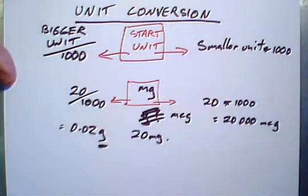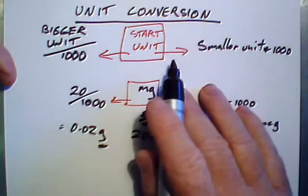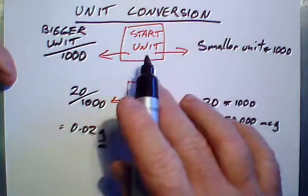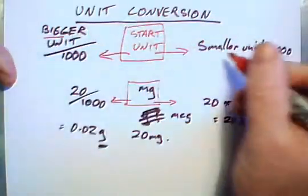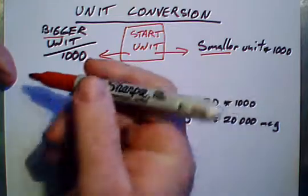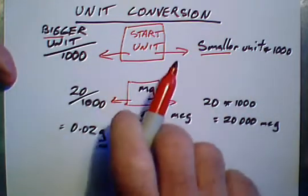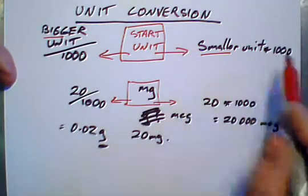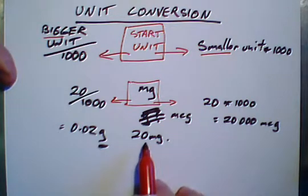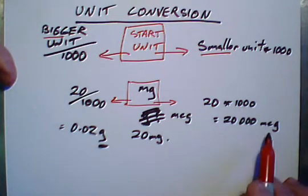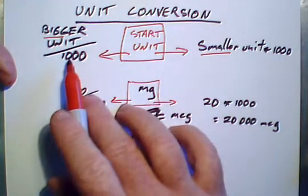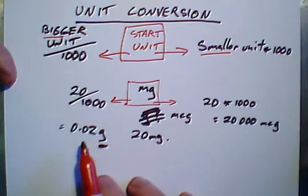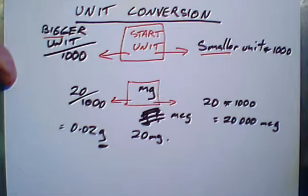So when you're doing this conversion, you have your start unit, you have your final units. The bigger or the smaller, and you go in that direction. So the smaller units multiplied by 1,000. So 20 milligrams becomes 20,000 micrograms. If you're going to a bigger unit, then you go dividing by 1,000. Just try that out. I think you'll find that a useful tool.